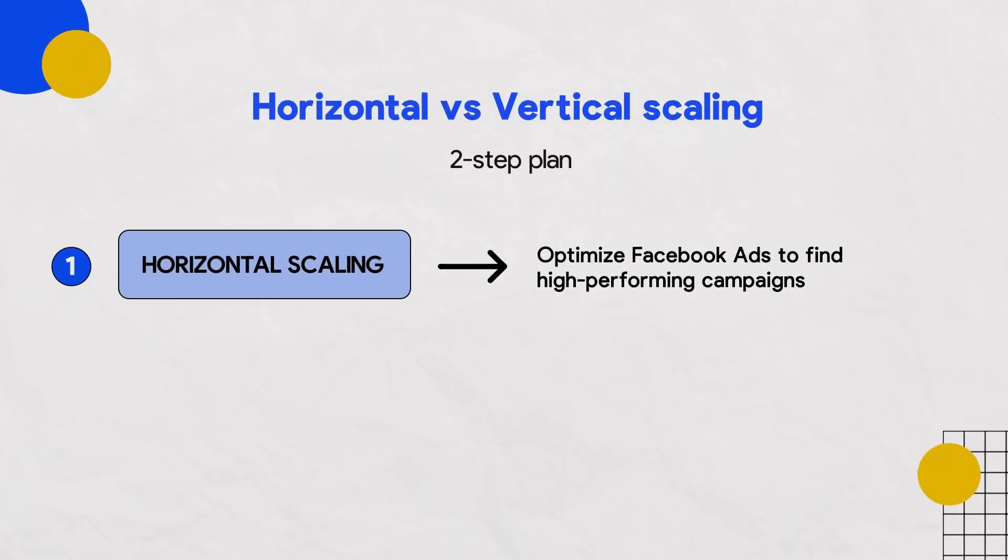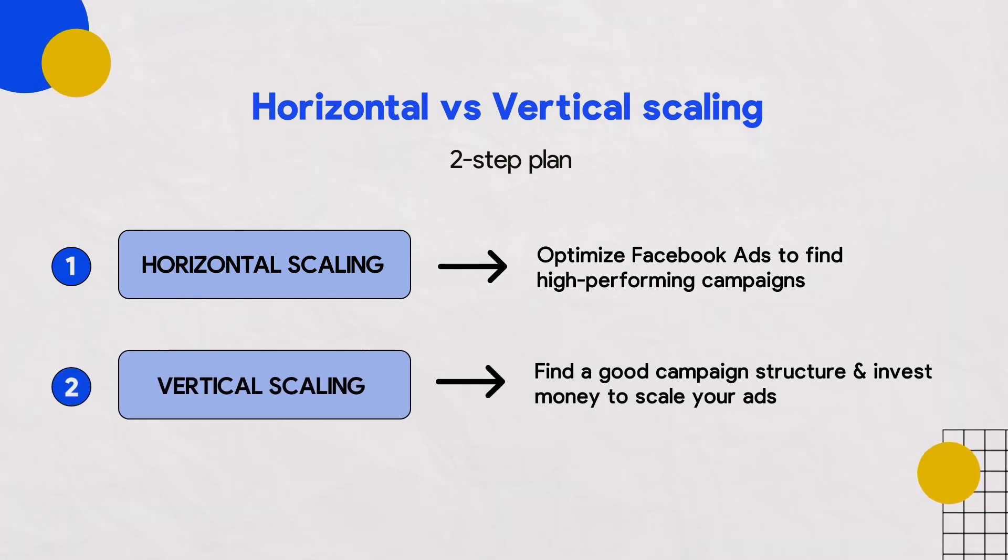So which one should you pick — horizontal or vertical scaling? Horizontal scaling is more about optimizing your ads with different target audience options and different creatives to find the high-performing ones and run profitable ad campaigns. On the flip side, vertical scaling is the way to go when you've built a campaign structure that really works and you don't want to make adjustments that might hurt performance. Try to do a combination of both: start with horizontal scaling to get things just right and find what drives conversions, then switch to vertical scaling to boost your success even more. It's a two-step plan.